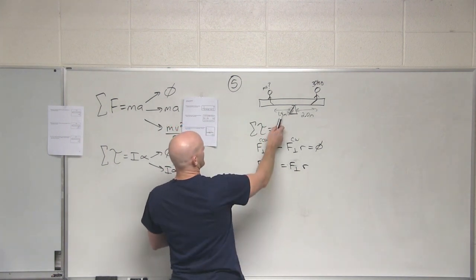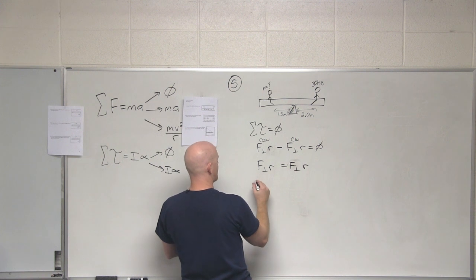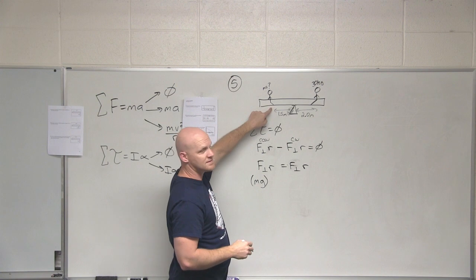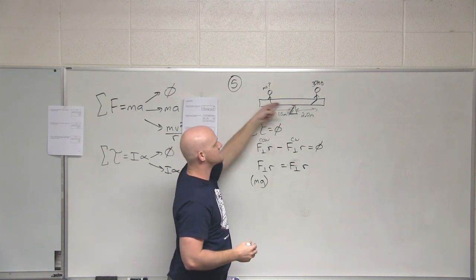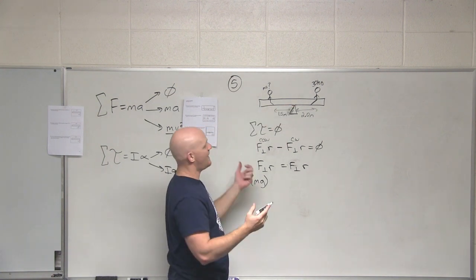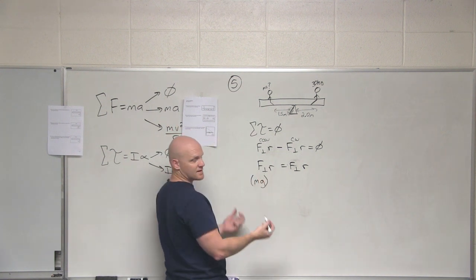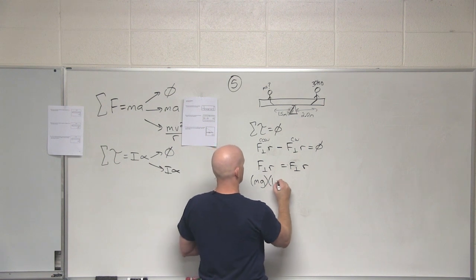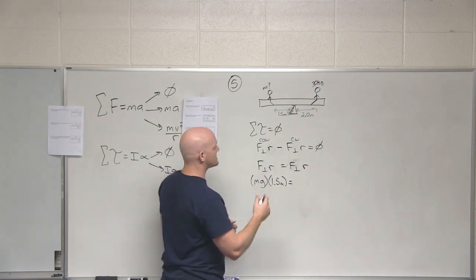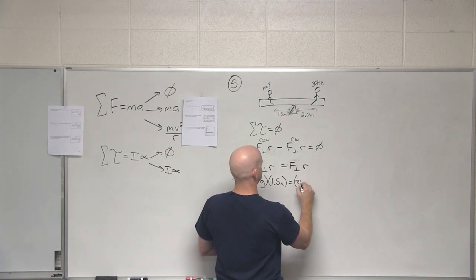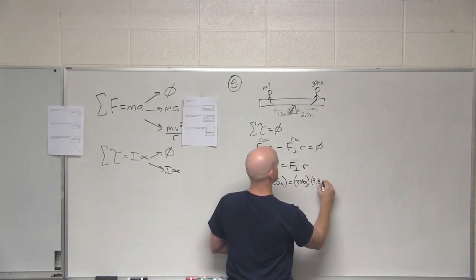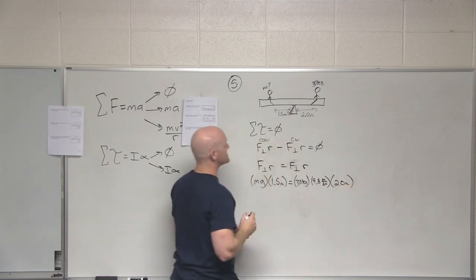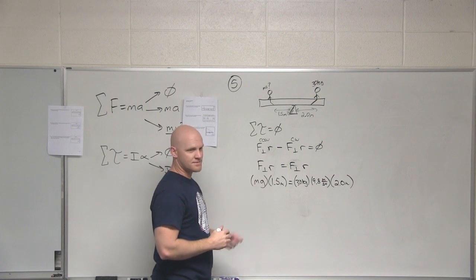And so in this case, counterclockwise, I have mg as the force. In this case, that force is directed at what angle relative to this lovely seesaw? Yeah, it's perpendicular. So I don't have to worry about sine theta because sine 90 is one. And then the lever arm distance is 1.5 meters. And the force on the other side is 30 times 9.8 times the 2.0 meters.